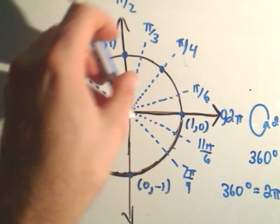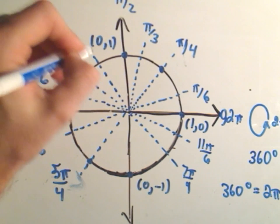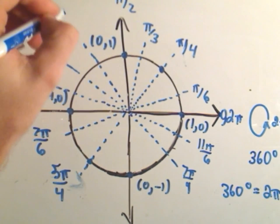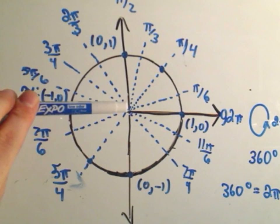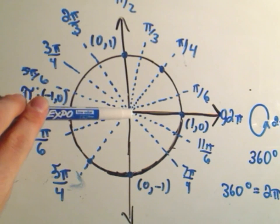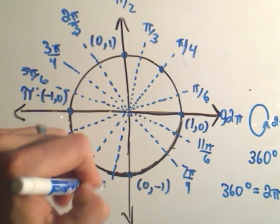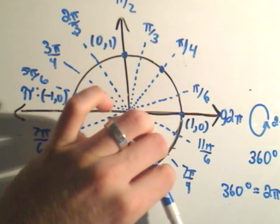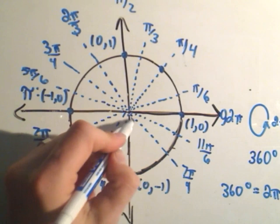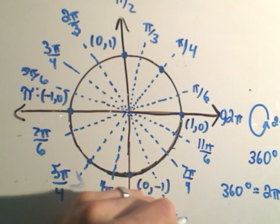For π/3: 2π/3 is up in the second quadrant, 3π/3 puts you at the negative x-axis, 4π/3 is down in the third quadrant, and 5π/3 is over in the fourth quadrant.